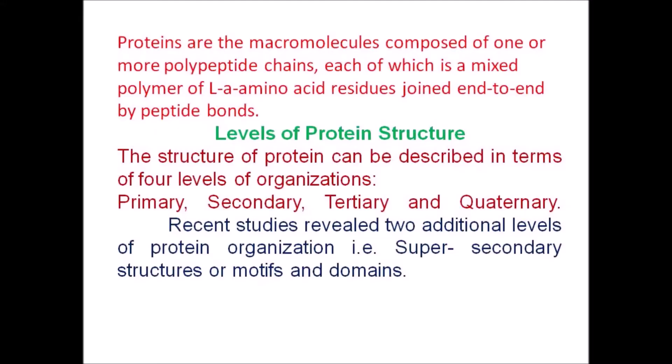Proteins are macromolecules composed of one or more polypeptide chains, each of which is a mixed polymer of L amino acid residues joined end to end by peptide bonds. Levels of protein structure can be described in terms of four levels: primary, secondary, tertiary, and quaternary.